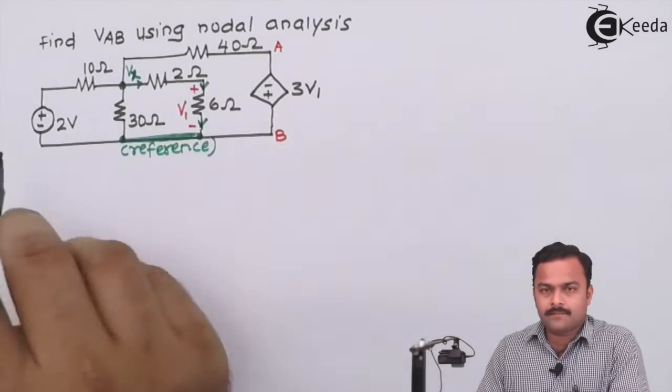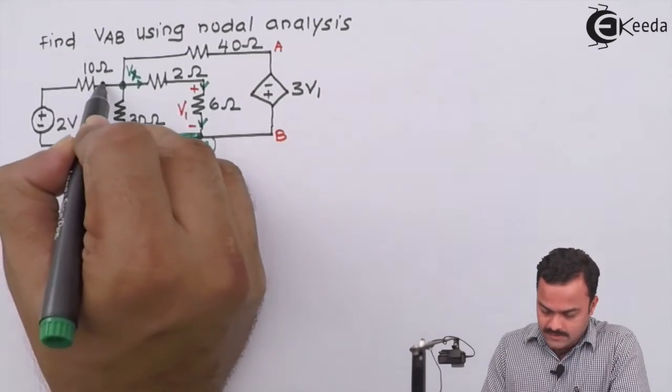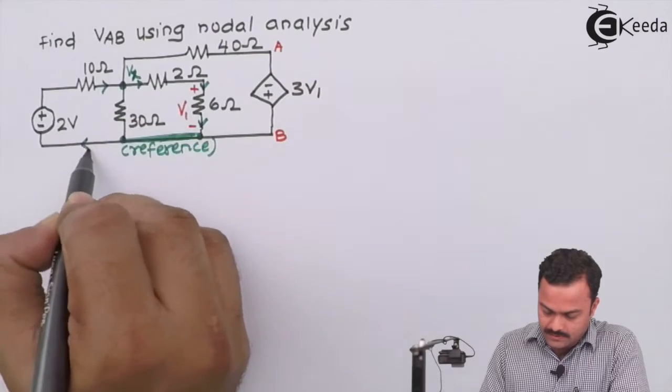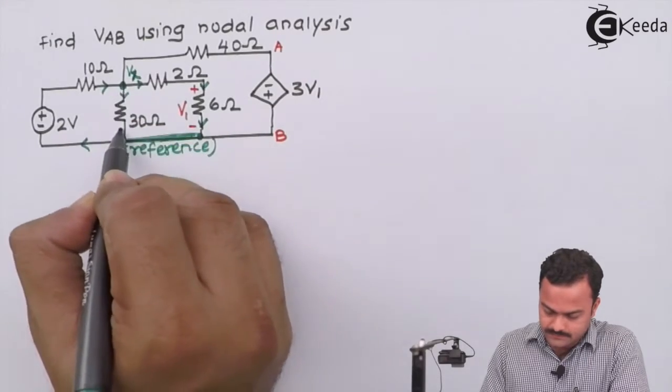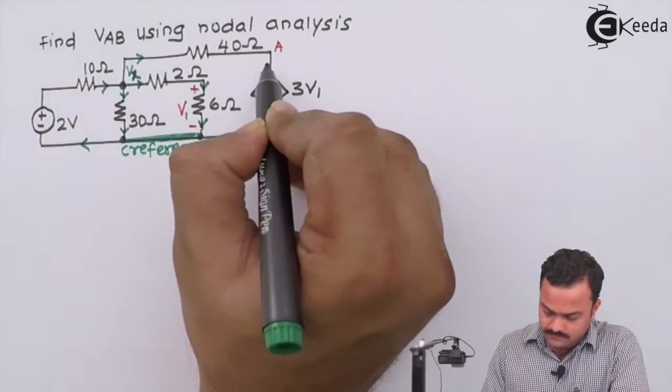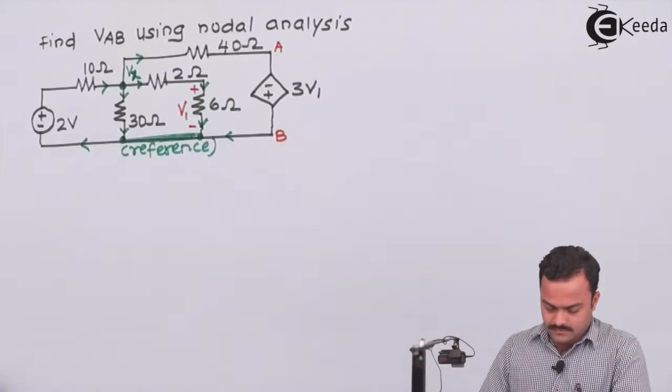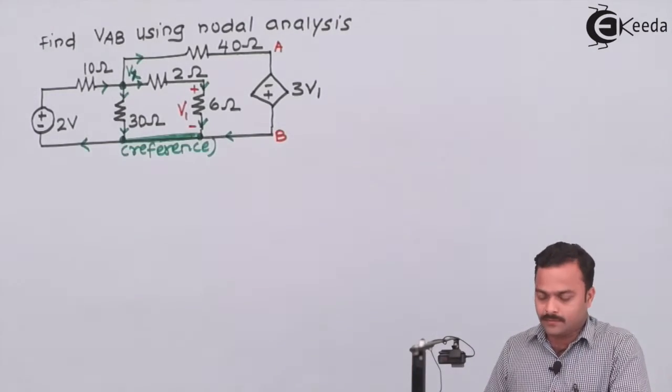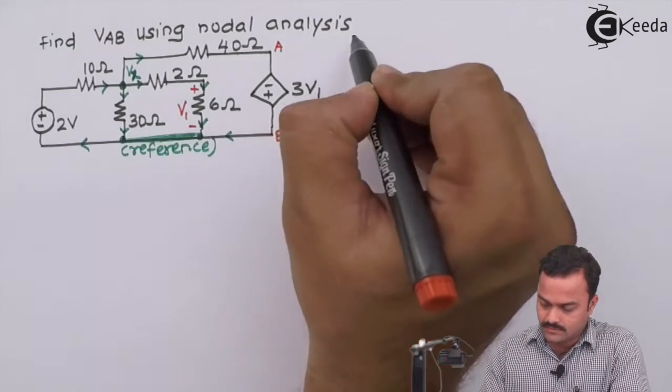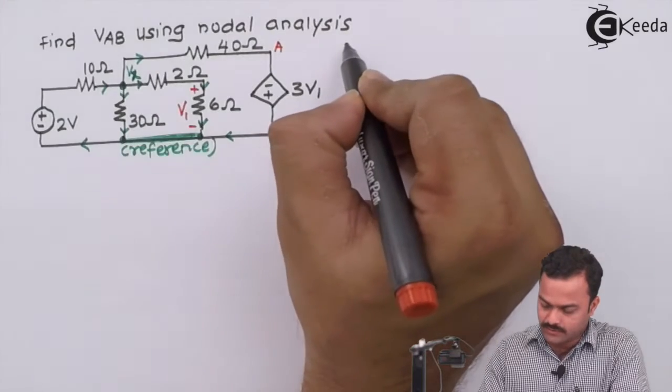For rest of the branches, we can select any random current direction. So now we are ready to apply KCL to the only node present in the circuit, which is node X.